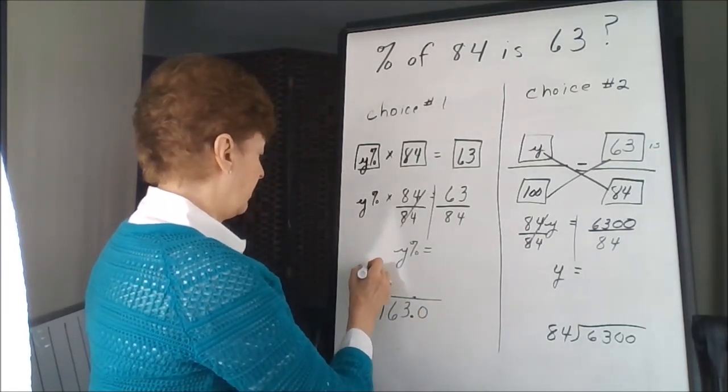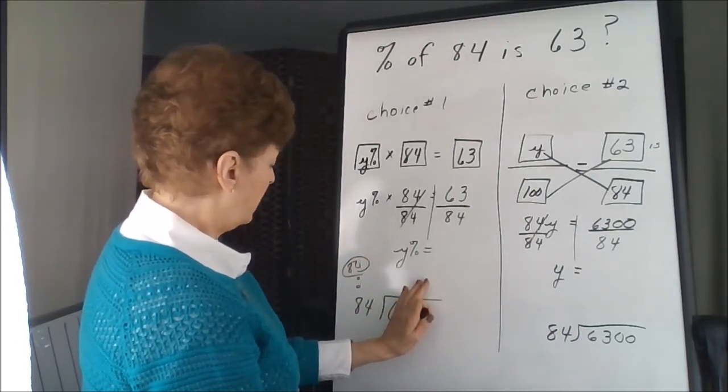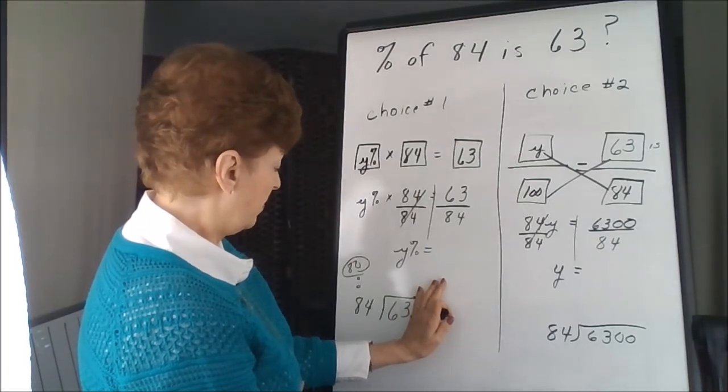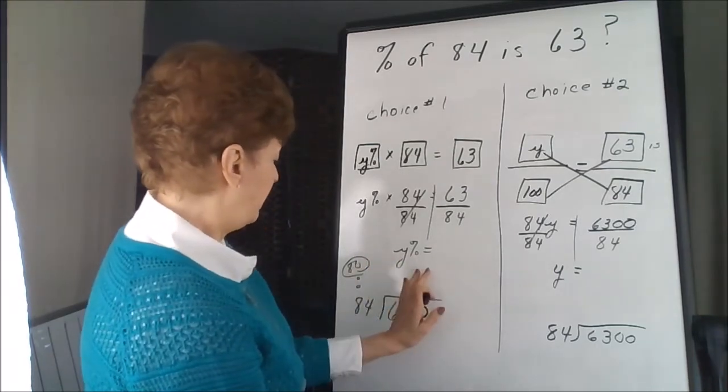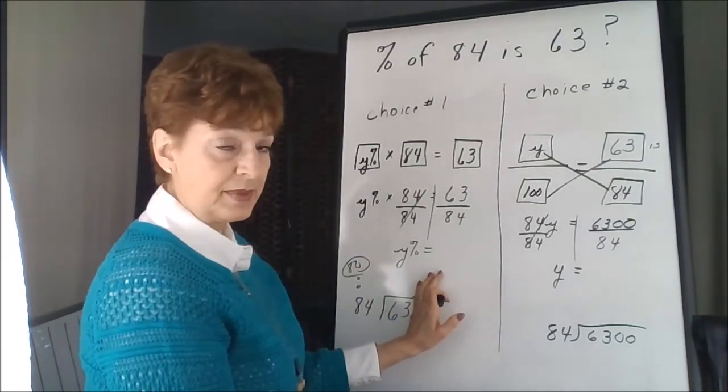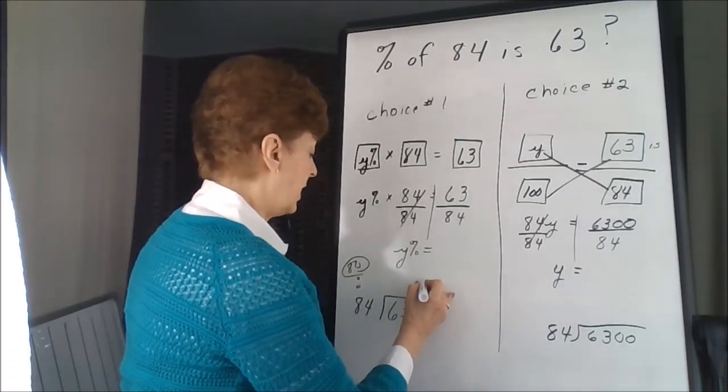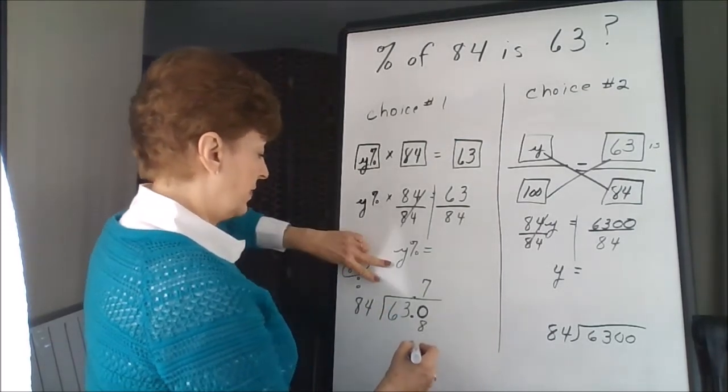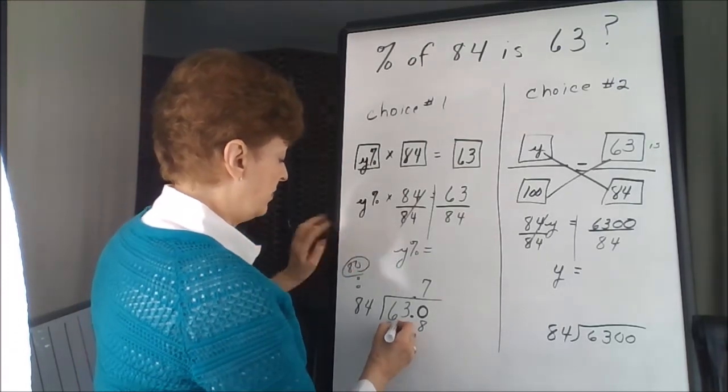84, you could think of it as 80. So our first number, 6 is too small, 63 is too small. We're going to have to start right there. 8 divides into 63, well 8 times 7 is 56, that's as close as we can get. 7 times 4 is 28. 7 times 8 is 56, 57, 58.